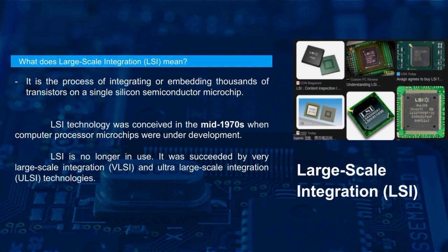LSI defines the technology used to build powerful microchips or integrated circuits in a very small form factor. It succeeded small-scale integration (SSI) and medium-scale integration (MSI), which included tens to hundreds of transistors per microchip. LSI consists of thousands of transistors closely embedded in a very small microchip. One of the first components built on LSI technology was the 1K-bit RAM, which contained 4,000 transistors. Later components and microprocessors held up to 10,000 embedded transistors.